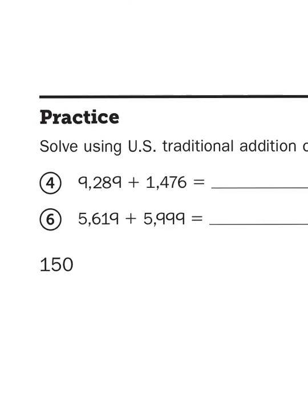So why don't I just take problem number six: 5,619 plus 5,999. Again, because they set it up sideways in a number sentence, I'm going to rewrite it as a vertical algorithm. So I'm going to just rewrite the problem in the space below: 5,619 plus 5,999.